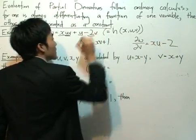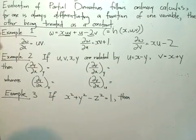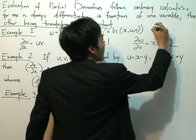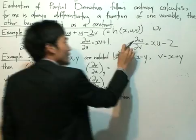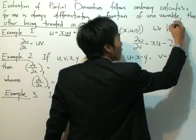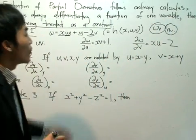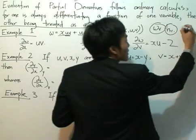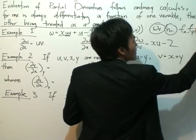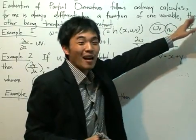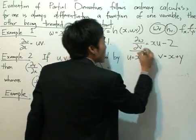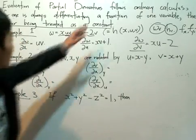I want to introduce alternative notations. We can write partial w over partial v as w subscript v, or h subscript v. However, sometimes you want to avoid subscripts when dealing with vectors, because when dealing with vectors, subscripts like f subscript x, f subscript y, or f subscript z can represent components rather than partial derivatives. So when working with vectors, it's sometimes preferable to explicitly write partial w over partial v to avoid ambiguity.